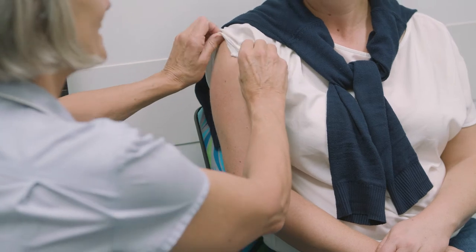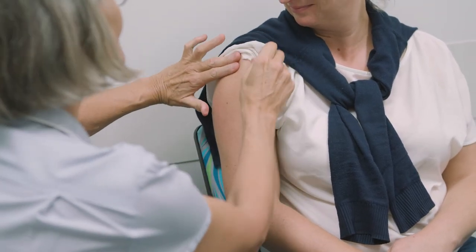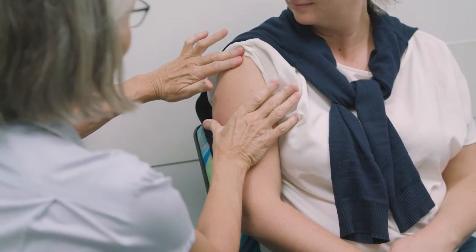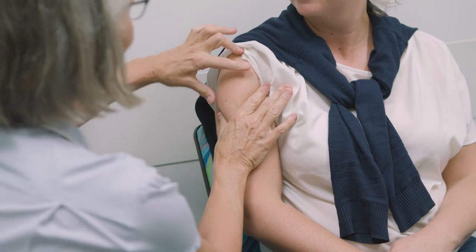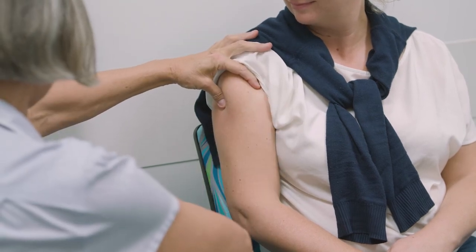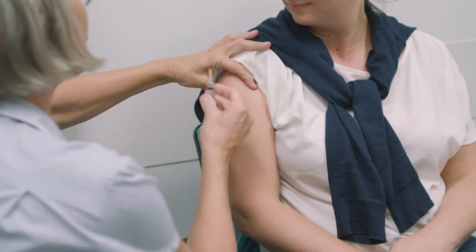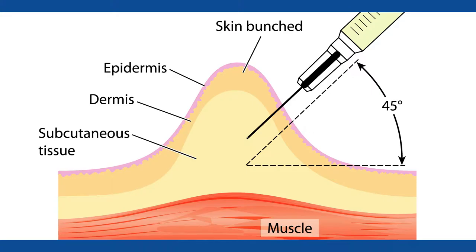Subcutaneous injection administers the vaccine into the fatty layer above the muscle and below the skin. Pinch up on the subcutaneous tissue to prevent injection into muscle. Insert the needle at a 45 degree angle to the skin. It's not necessary to aspirate before administering the injection.